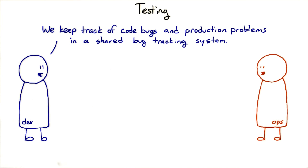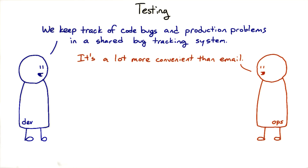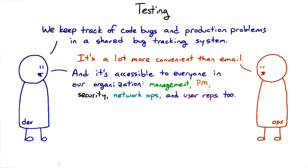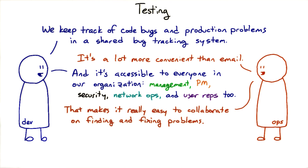Having a single unified bug tracking system can go a long way toward improving communication amongst teams. If it's accessible to everyone in the organization to report issues and collaborate on fixing them, then that's one less barrier to getting real work done.